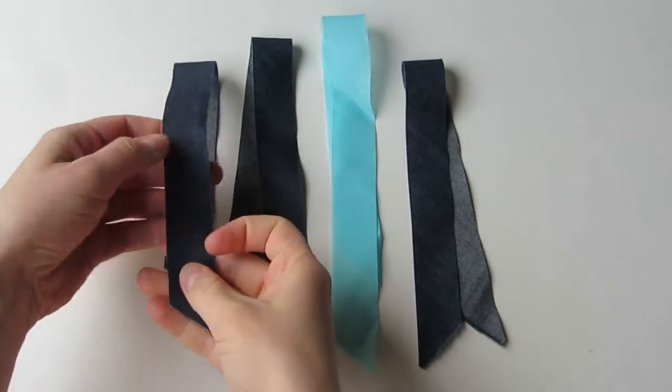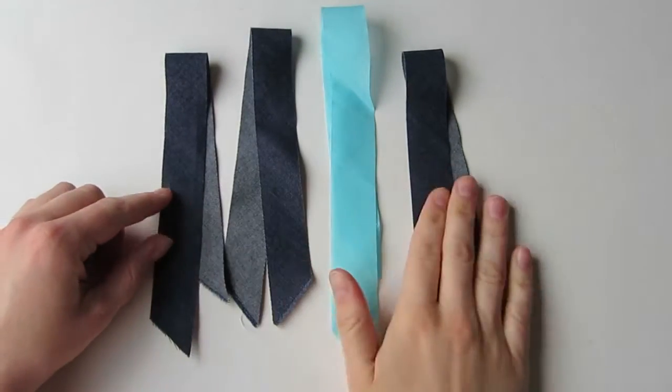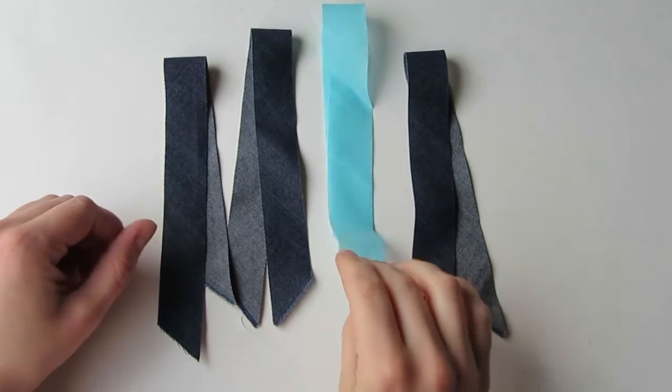These are bias strips about an inch wide by 12 inches long, and I'm going to sew them into tubes. You'll notice I have three of this denim color and then one of this teal blue. This is going to be my accent strip that runs down the middle of the braid.